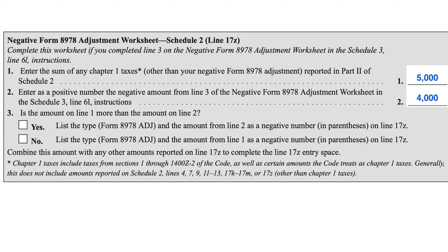Line 17Z on Schedule 2 is kind of the catch-all line where other taxes that may be calculated are simply listed as other taxes. You only need to complete this worksheet if you completed Line 3 on the Negative Form 8978 Adjustment Worksheet located in Schedule 3, Line 6L in the instructions.